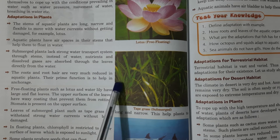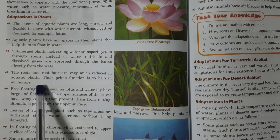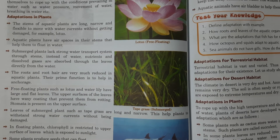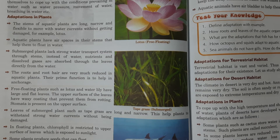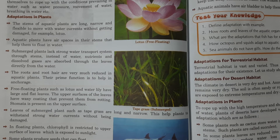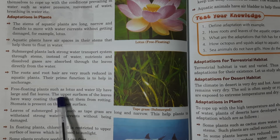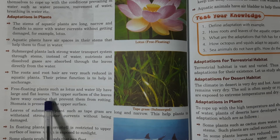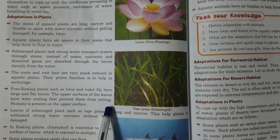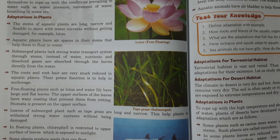The roots and root hairs are very much reduced in aquatic plants. Their main function is to hold the plant in place, as they do not need to transport material. Free-floating plants such as lotus and water lily have large and flat leaves. The upper surface of the leaves has a waxy coating that prevents them from rotting, and stomata are present on the upper surface.